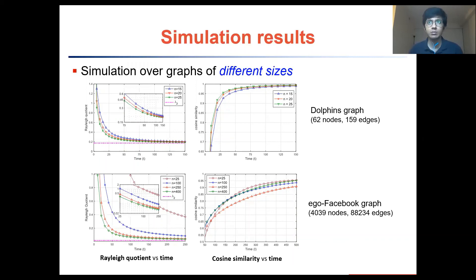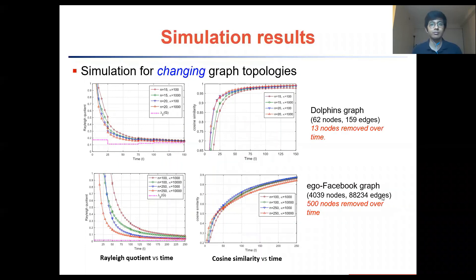The following plots show the simulation results for two graphs of different sizes: one with 62 nodes and 159 edges, and the other with about 4,000 nodes and 90,000 edges. For both graphs we can observe convergence to the Fiedler vector using both the Rayleigh quotient and the cosine similarity. It should be noted that even for a small number of random walkers, that is n equals 25, for a graph of over 4,000 nodes we can still observe convergence. This implies that the number of random walkers actually does not have to be very high in order for a framework to work well.